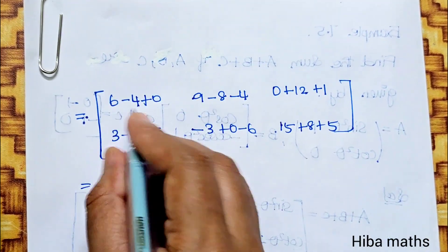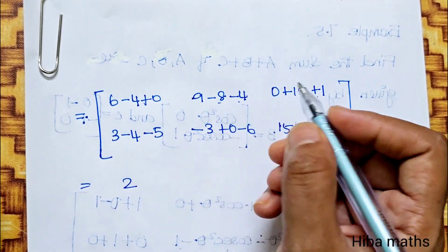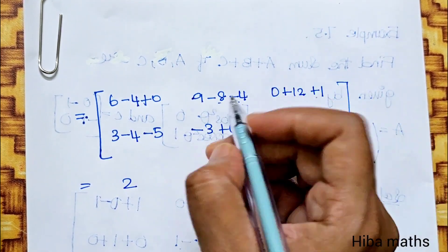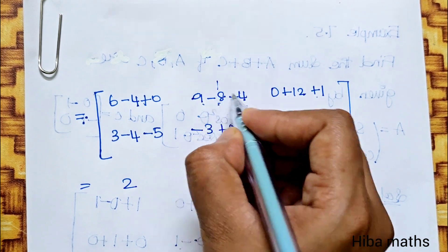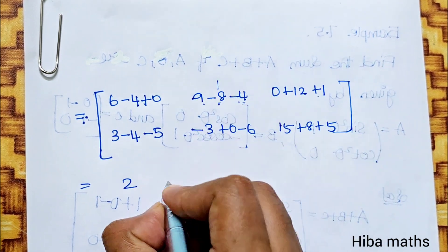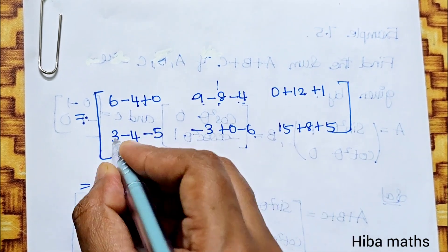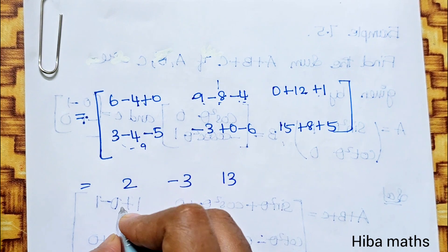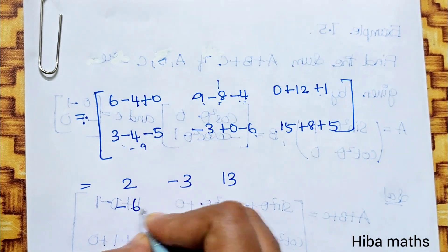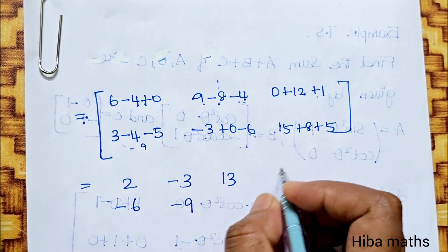Final result: 6, minus 4, 2; 9, minus 8, 1; 1, minus 4, minus 3; 13, minus 9, minus 6, minus 9.